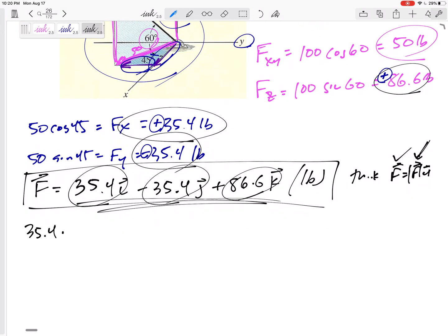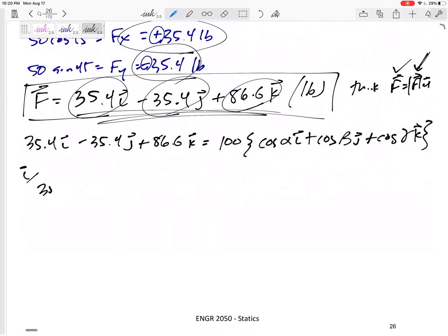So 35.4 in the I minus 35.4 in the J plus 86.6 in the K equals magnitude times cosine alpha I plus cosine beta J plus cosine gamma K. And so it's really three equations.